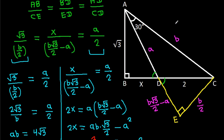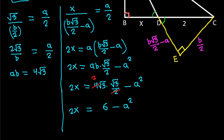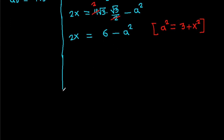In triangle ABD, the angle at B is 90 degrees. So by the Pythagorean theorem, A squared equals AB squared minus BD squared, which is root 3 squared minus x squared, giving A squared equals 3 minus x squared.